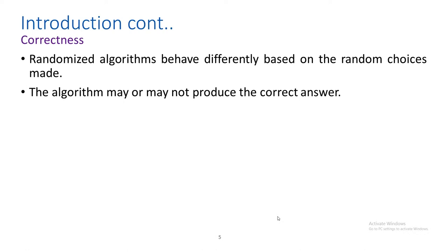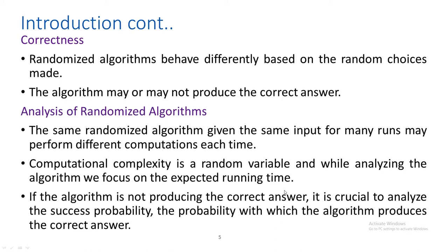Once you design an algorithm, you have to check the correctness. For randomized algorithms, since different runs on the same input can produce different outputs, it may or may not produce the correct answer. When you run the algorithm once, you may or may not get the correct answer. So the analysis involves finding the probability of success — what is the probability of getting the correct answer?